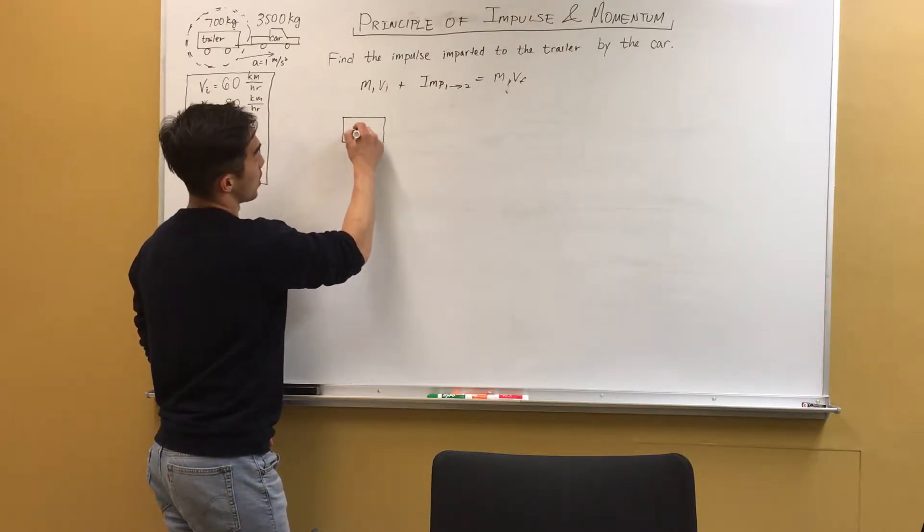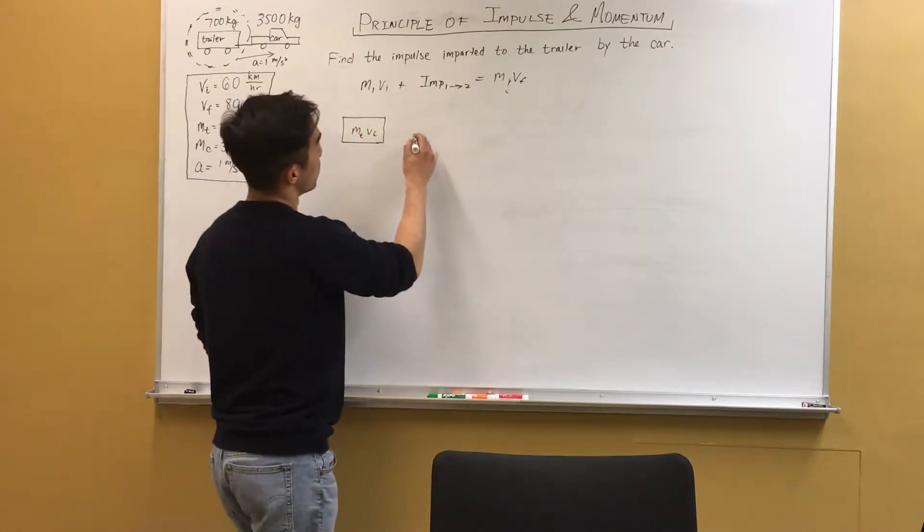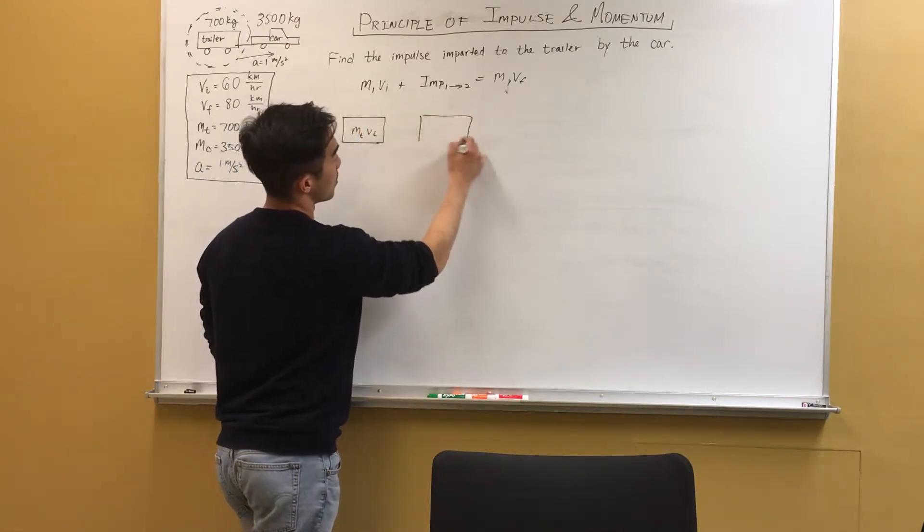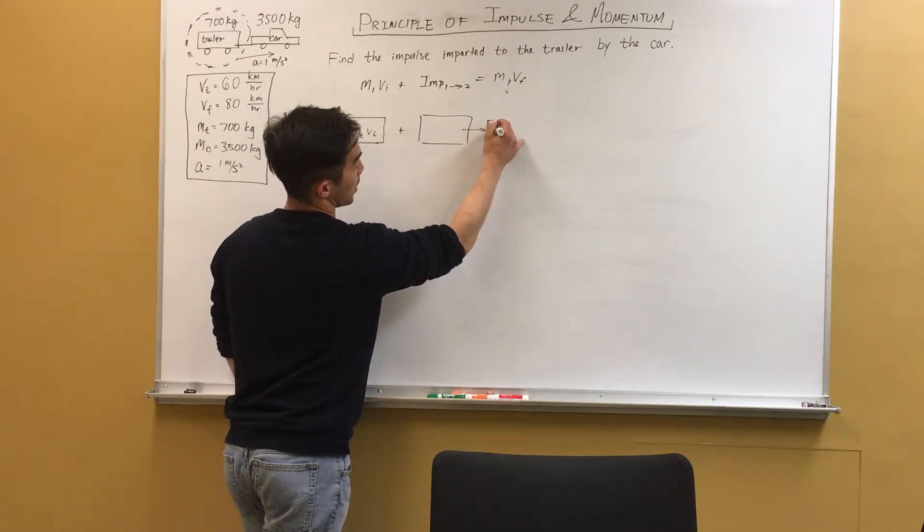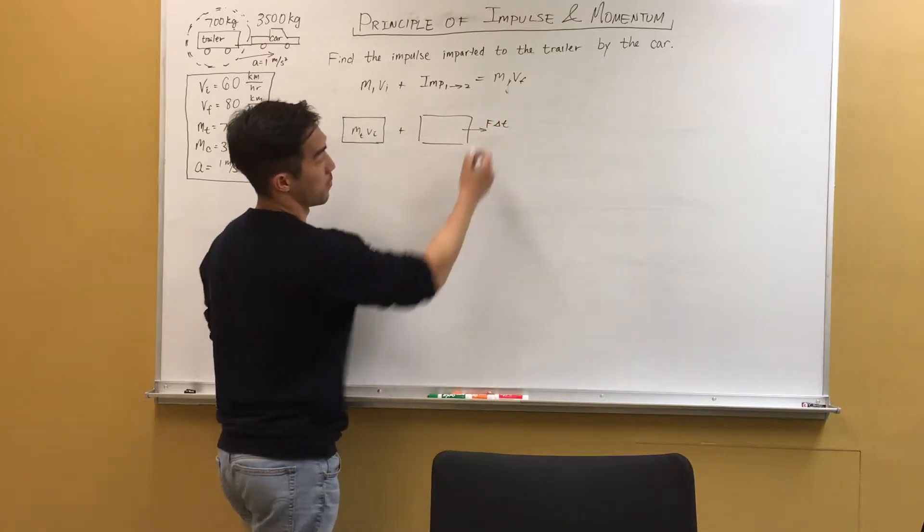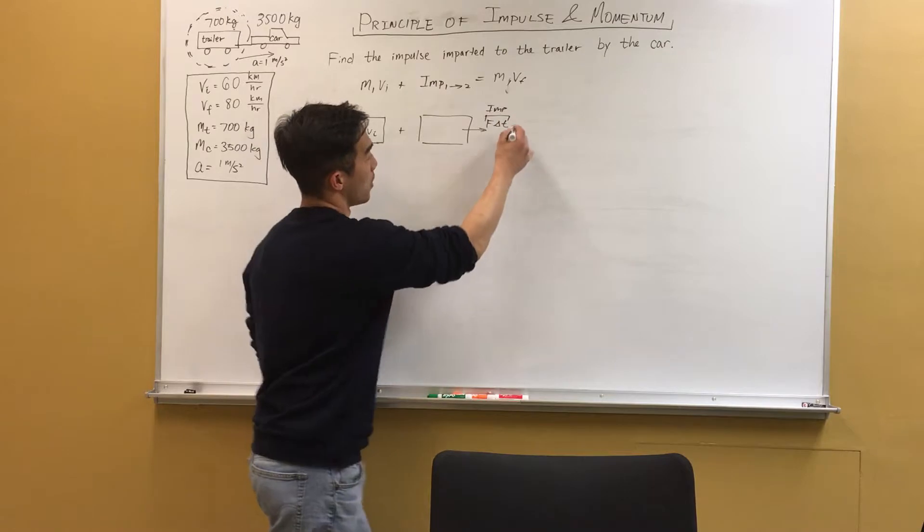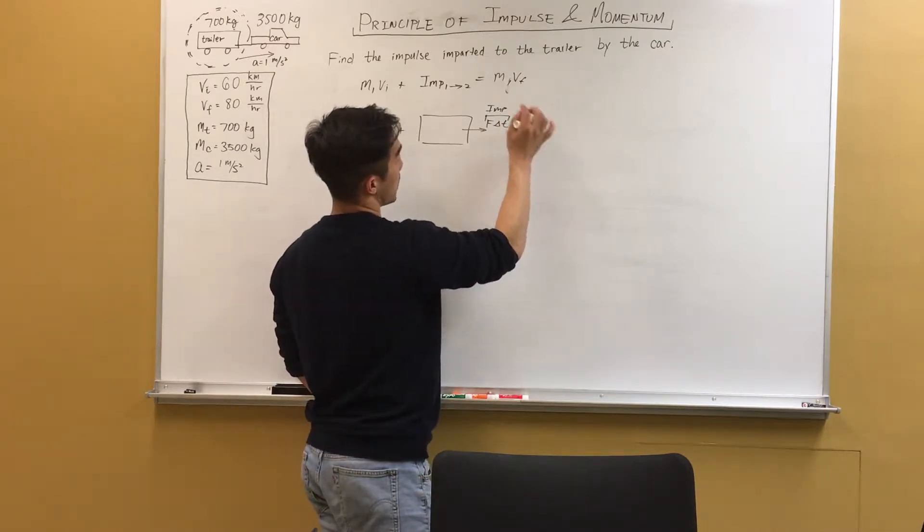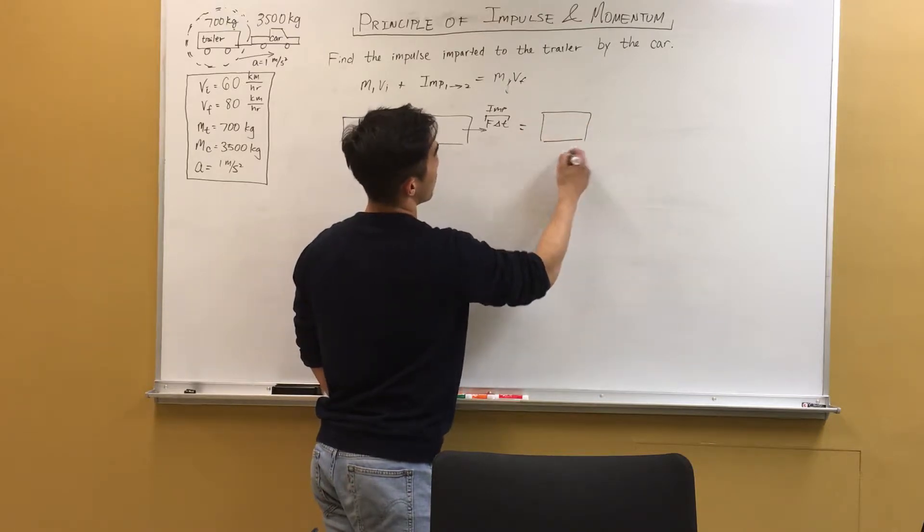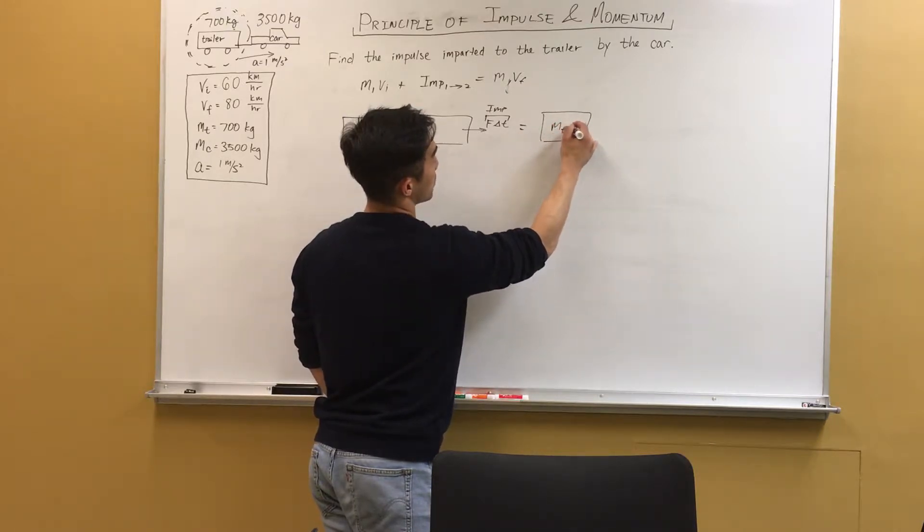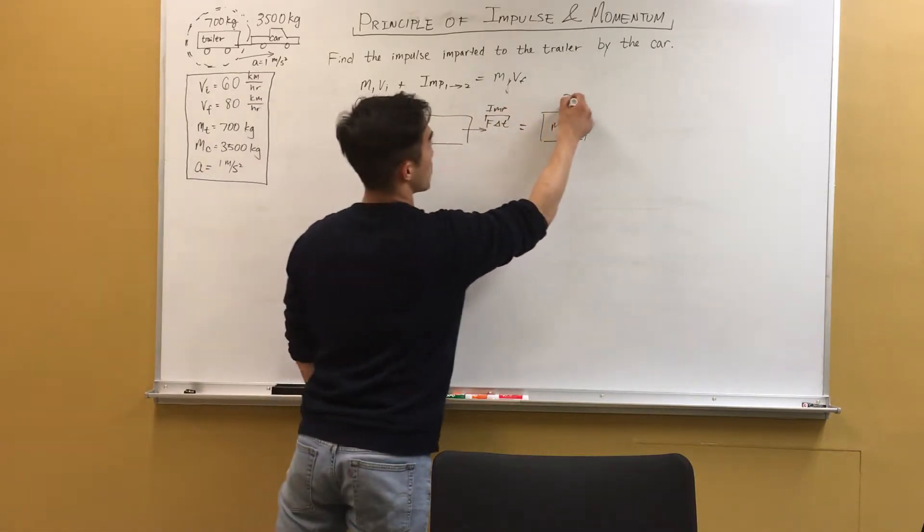So M1V initial is going to be the momentum of the trailer, M trailer V initial. The impulse is going to be the force times the change in time. And basically this is just impulse. And this will equal the momentum at state 2, M trailer times V. So this is the first state and the second state.